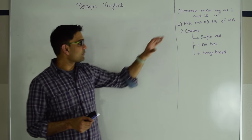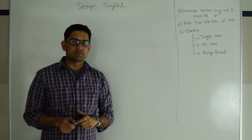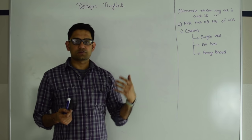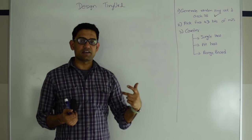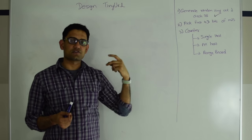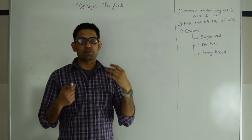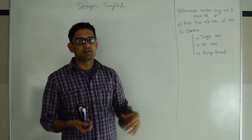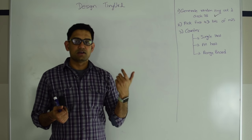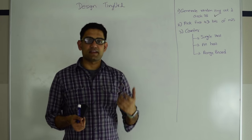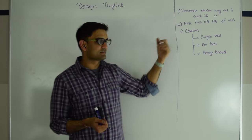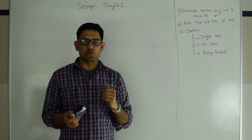What is the advantage of MD5 over the random URL approach? It saves some space in the database. Suppose two users want to generate a tiny URL for the same long URL. With the random technique, we would generate two random tiny URLs, resulting in two rows in the database. With MD5, both long URLs have the same MD5 and thus the same first 43 bits, enabling deduplication — we only need to store one row instead of two.